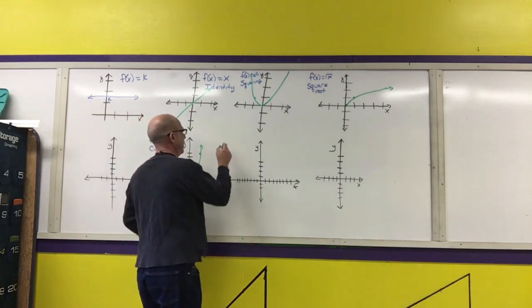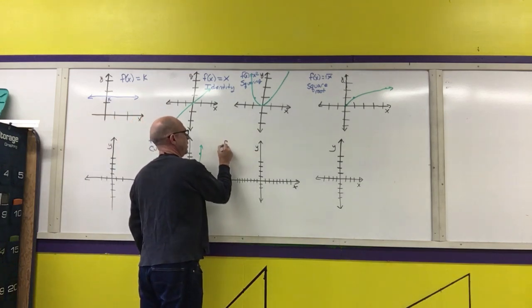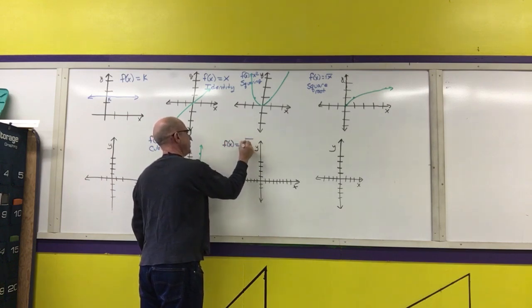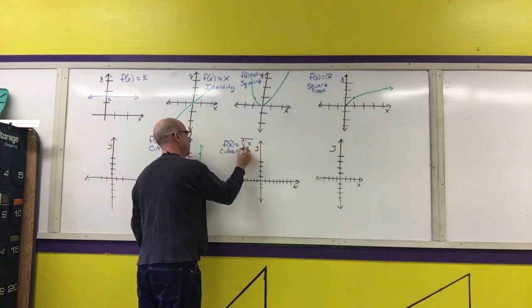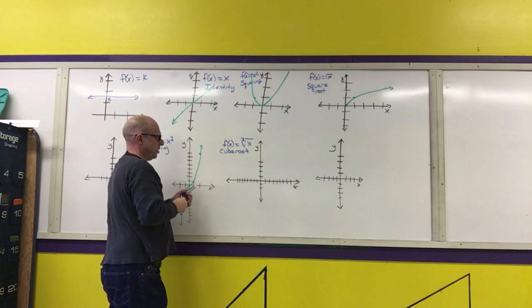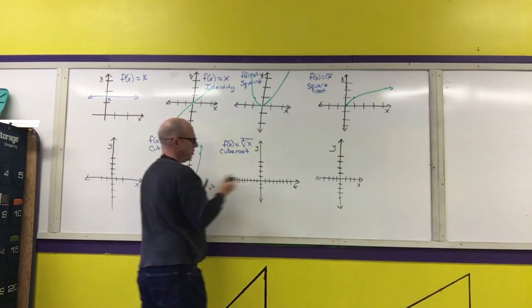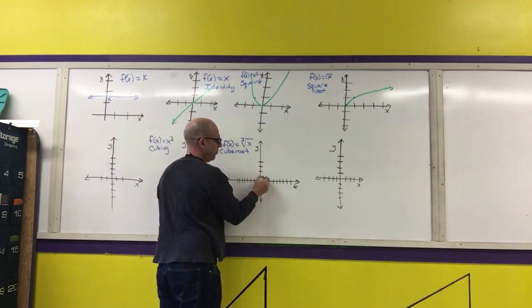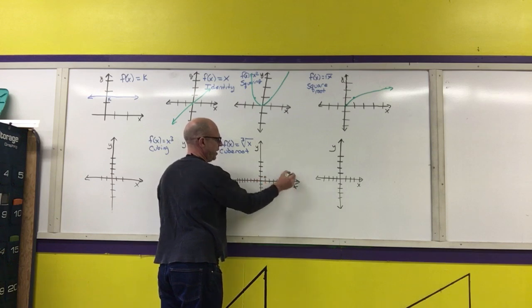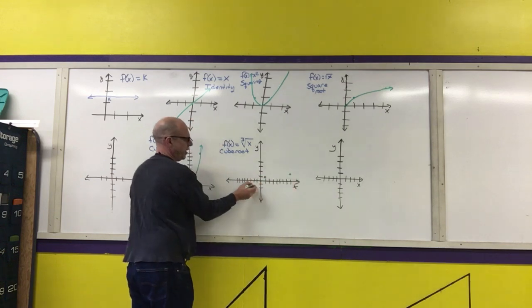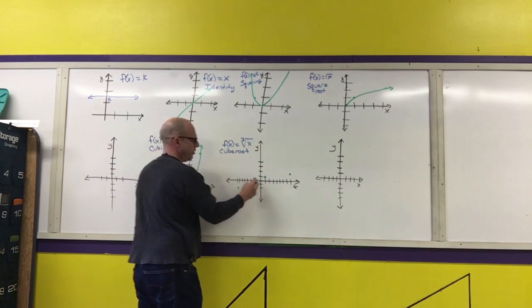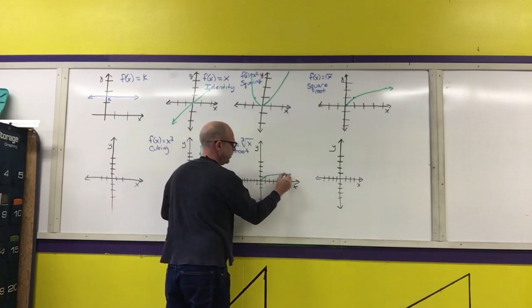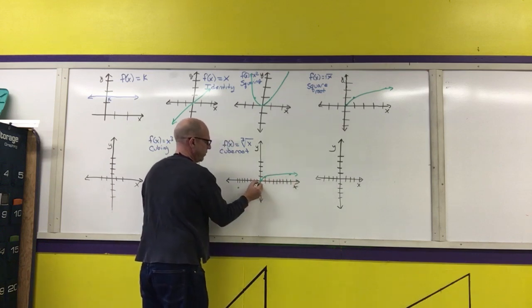Then we have f(x) = ∛x, called the cube root function. The cube root of 0 is 0, of 1 is 1, of 8 is 2, of -1 is -1, and of -8 is -2. That describes this graph.